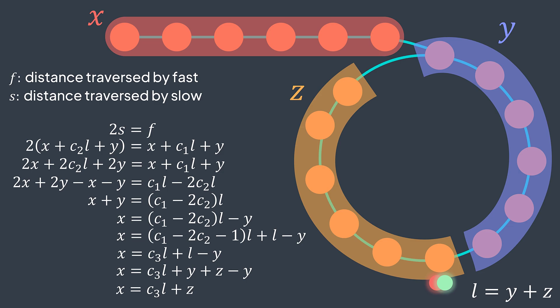This is why, if we take slow back to the head and keep walking one node at a time, they meet at the entry point of the cycle — because slow traverses x and fast traverses c3·l + z, which is the same distance. And that's why the Floyd cycle detection algorithm works. If slow and fast meet, there is a cycle, so we do the second step to find its entry point.